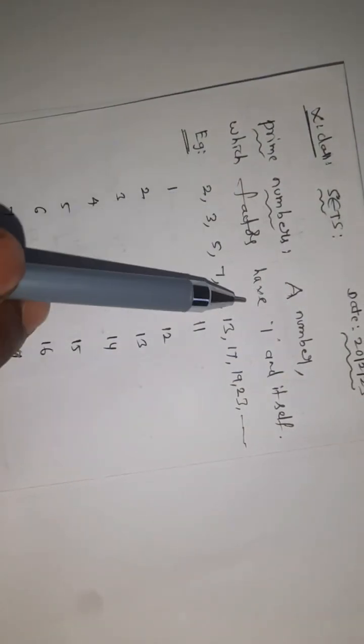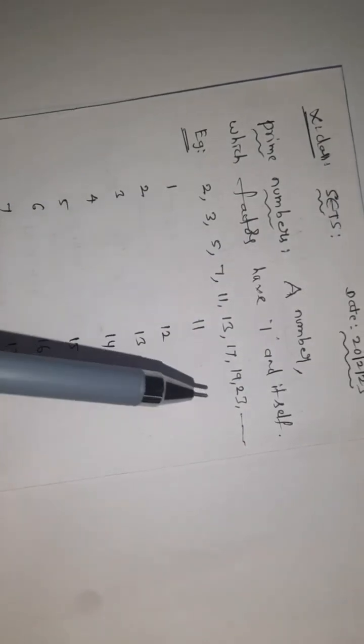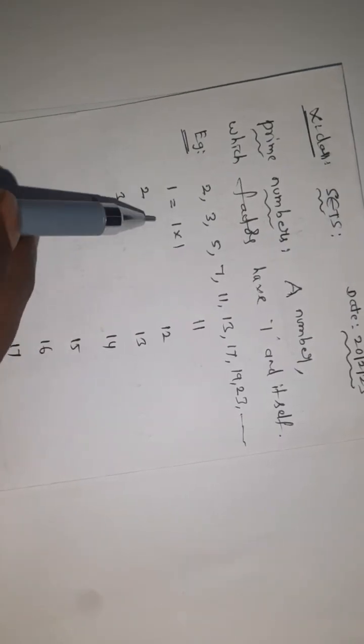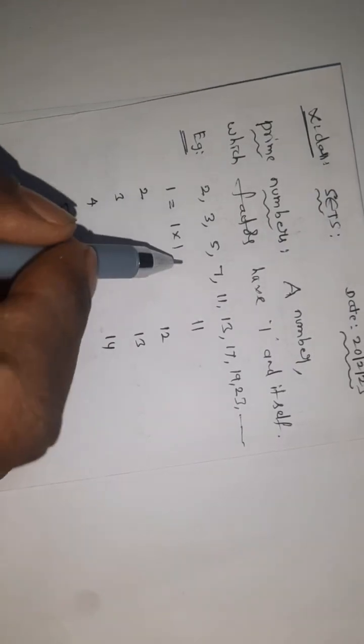A number which has factors of one and itself. The first number is 1. 1 times 1 - one and itself means only one number. This is not a prime number. Now coming to the second number.